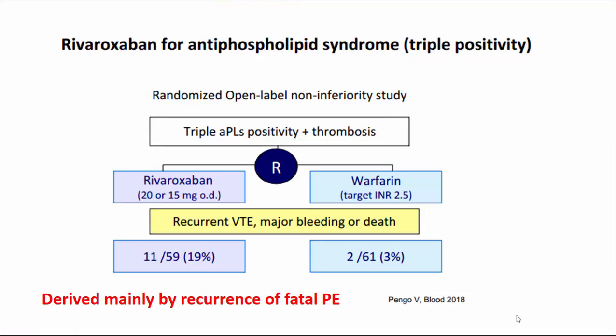The reason NOACs are contraindicated in antiphospholipid antibody syndrome is that when rivaroxaban was tested against VKA in these patients, primary endpoints were significantly worse in the rivaroxaban arm, driven mainly by recurrence of fatal pulmonary embolism.